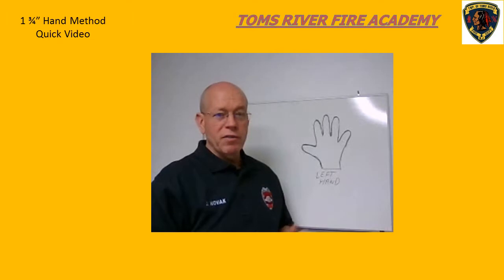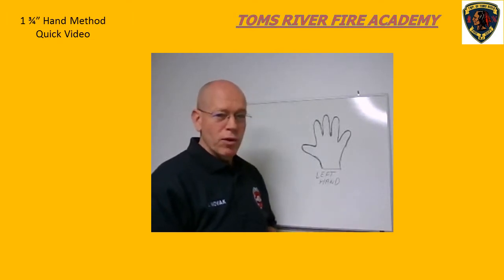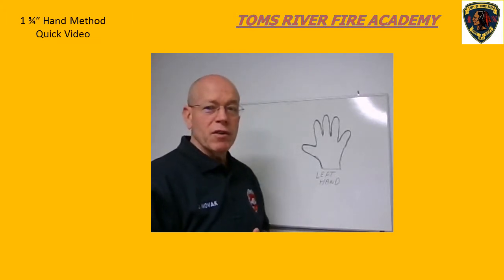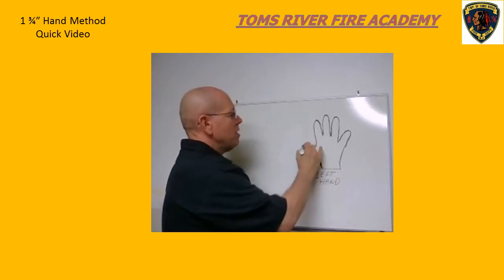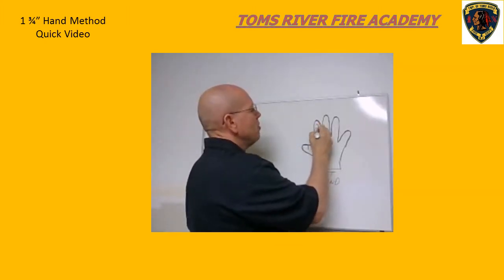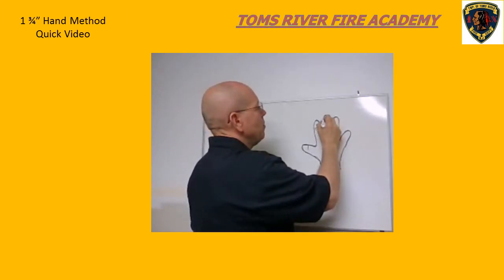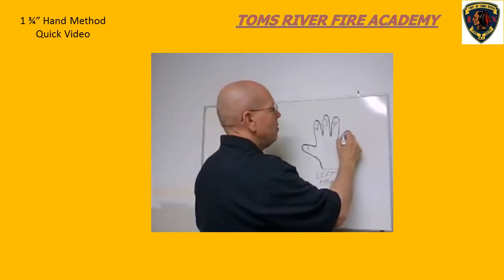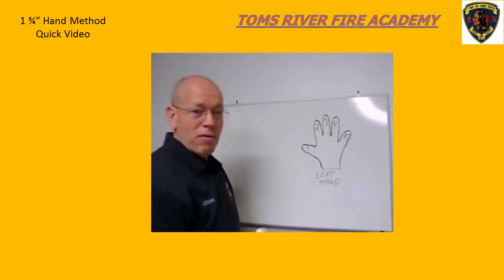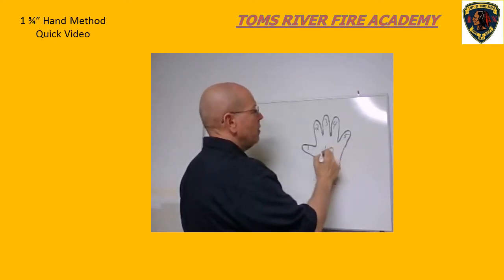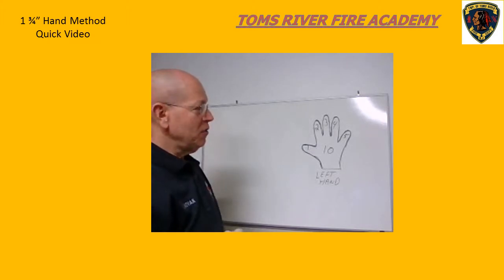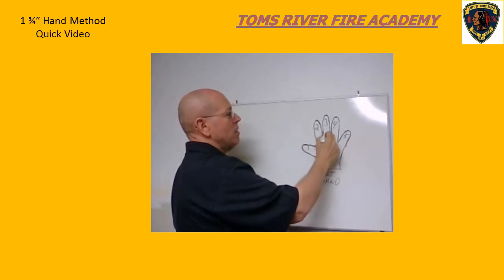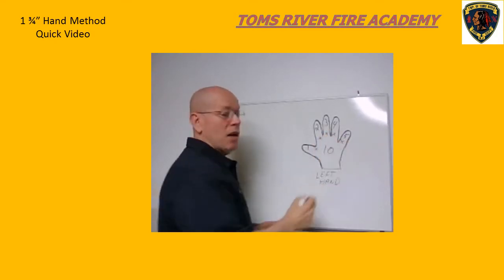The easiest way to do this is to take your left hand — as you can see, I have my left hand drawn up on the board. We're going to apply simple numbers to each finger: thumb is number one, index finger is number two, middle finger is number three, ring finger is number four, and pinky is number five. On the palm of our hand, we put the number 10. Each finger is therefore a multiplier of 10 — one times 10, two times 10, three times 10, four times 10, or five times 10.